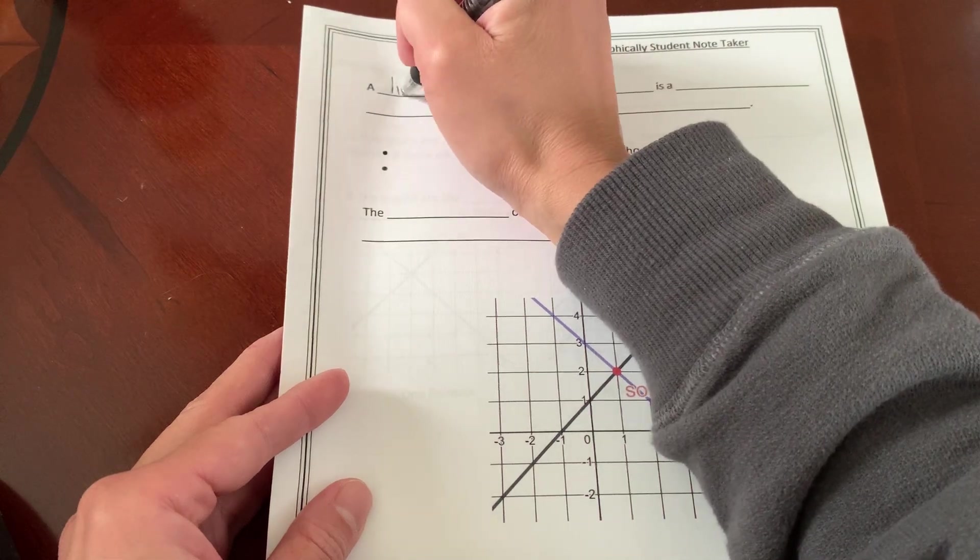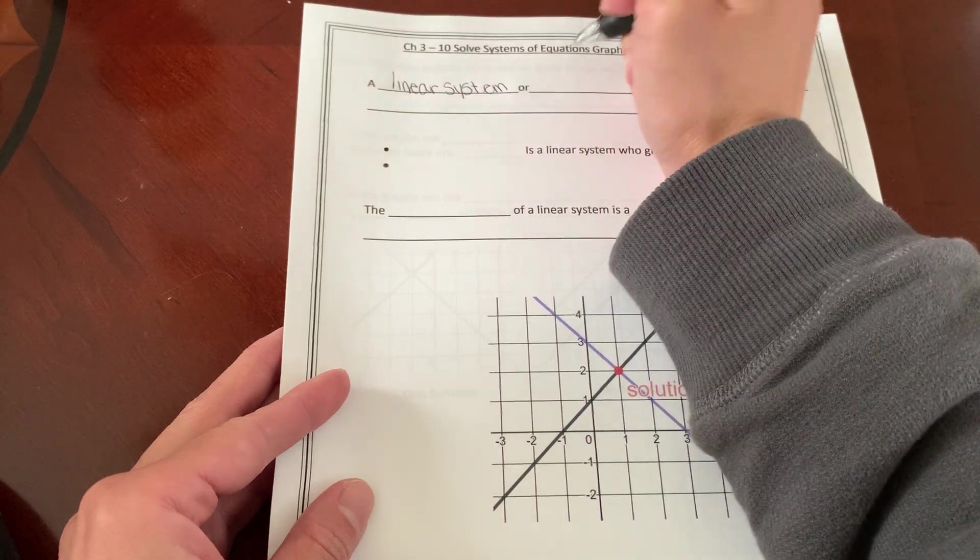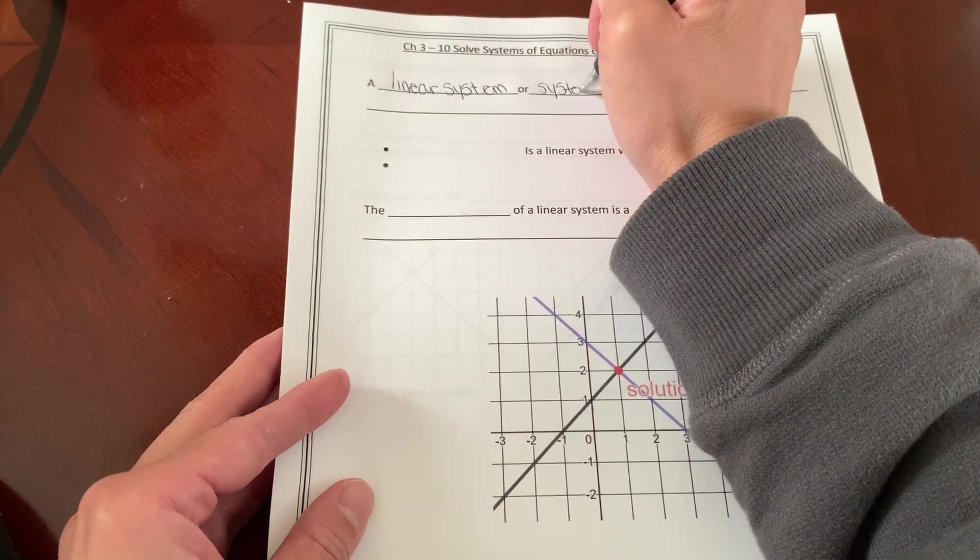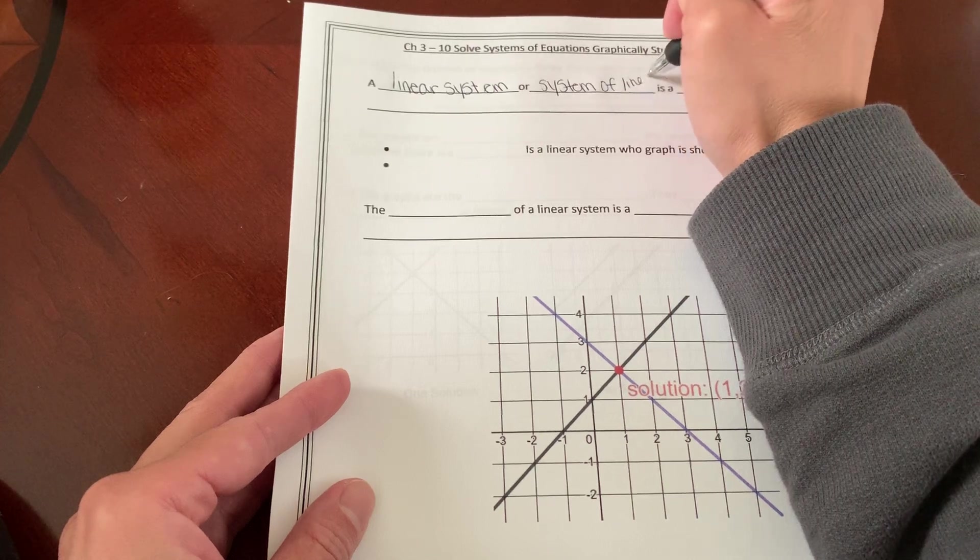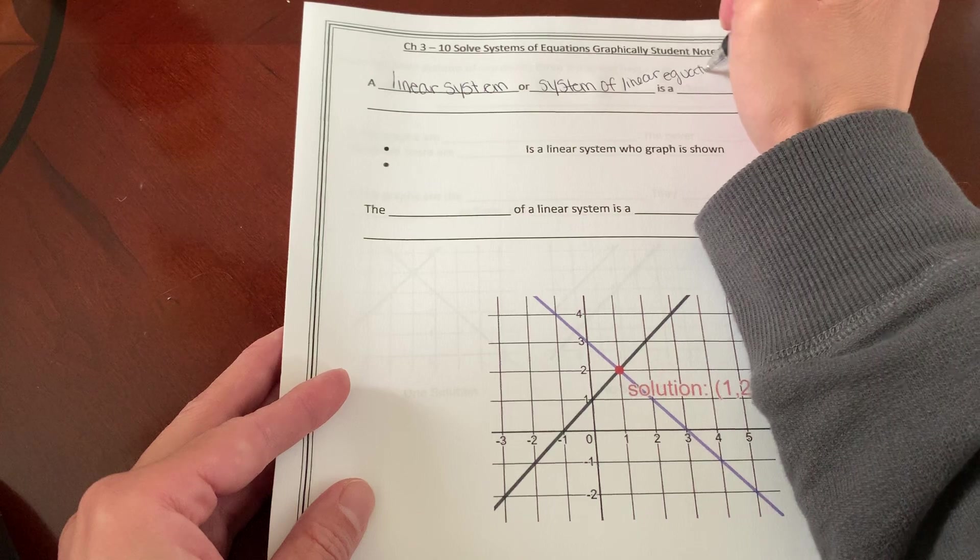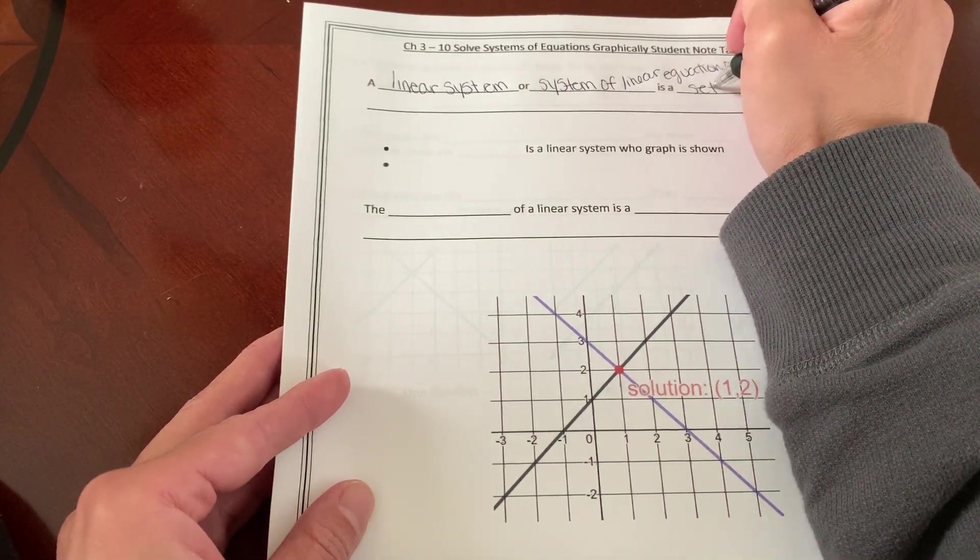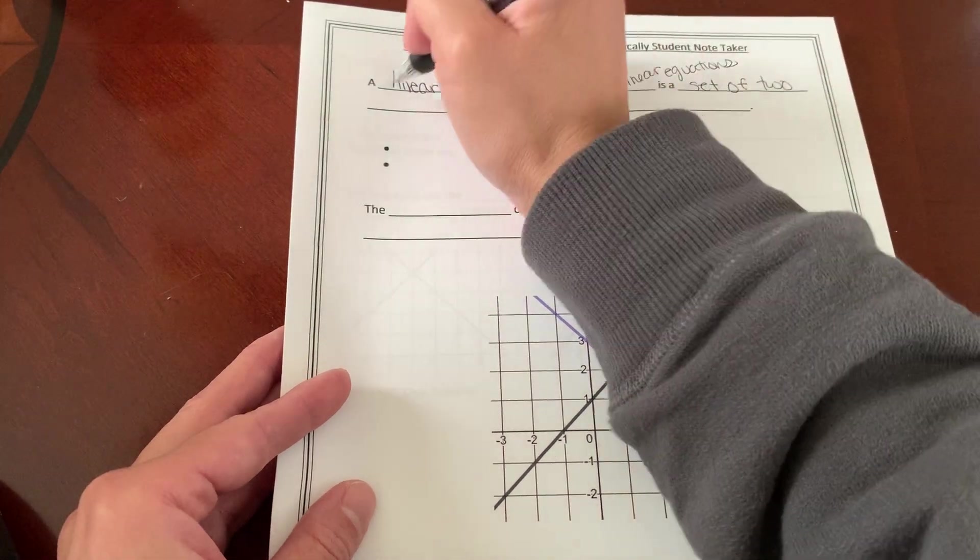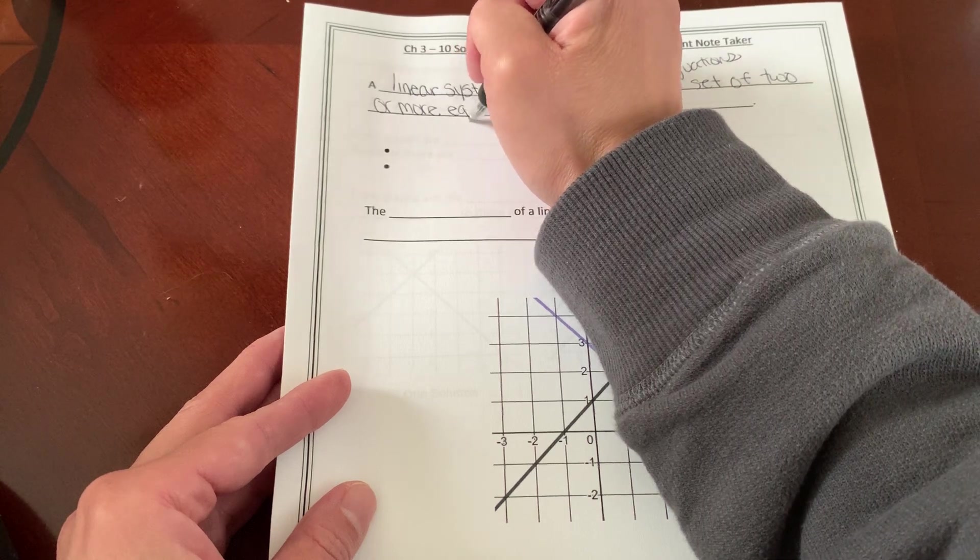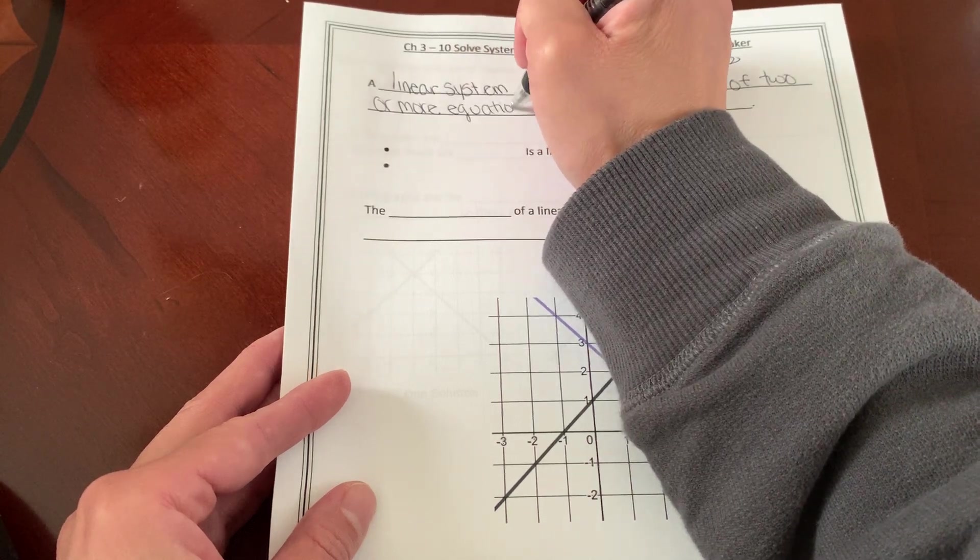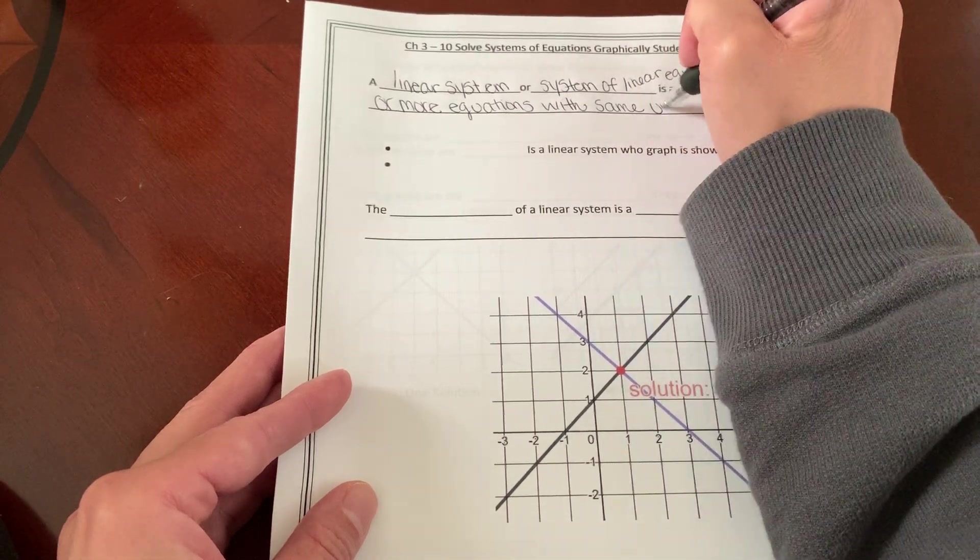A linear system or a system of linear equations is a set of two or more equations with the same unknowns.